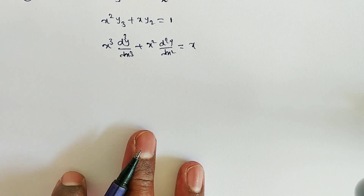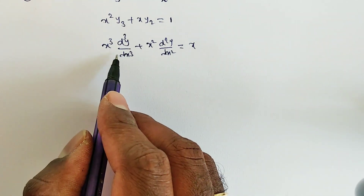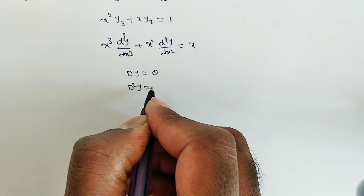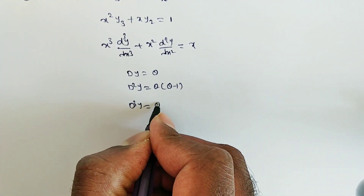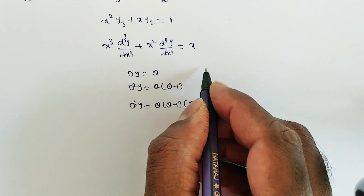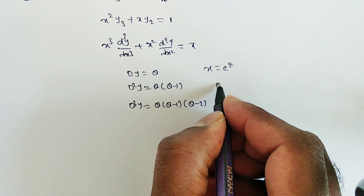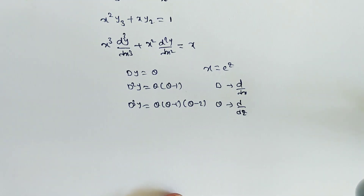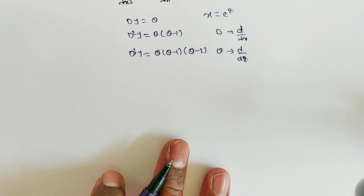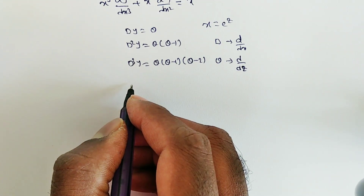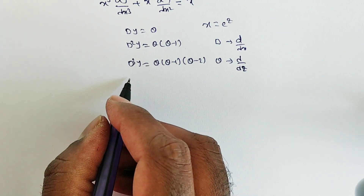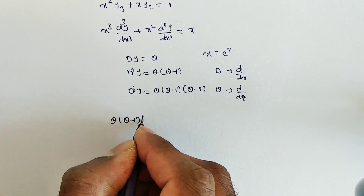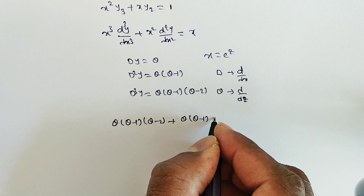To solve, we convert variable coefficients to constant coefficients using x = eᶻ. We substitute: x·d = θ, x²d² = θ(θ-1), and x³d³ = θ(θ-1)(θ-2). Remember, d is d/dx and θ is d/dz. The right-hand side x = eᶻ. After substitution, we simplify by factoring: θ(θ-1)(θ-2) + θ(θ-1), with common factor θ(θ-1), giving θ(θ-1)(θ-2+1) = θ(θ-1)(θ-1) = θ(θ-1)².